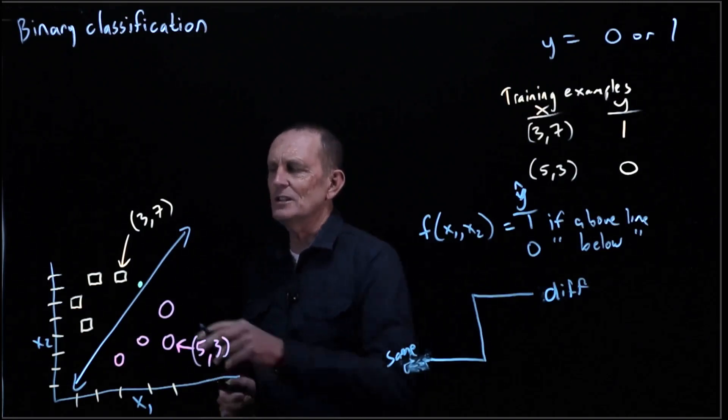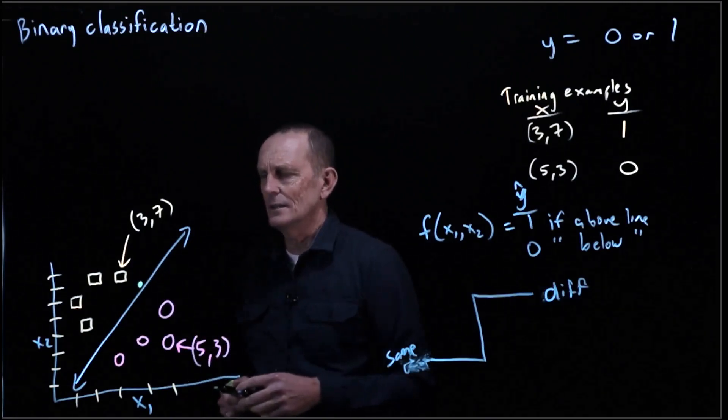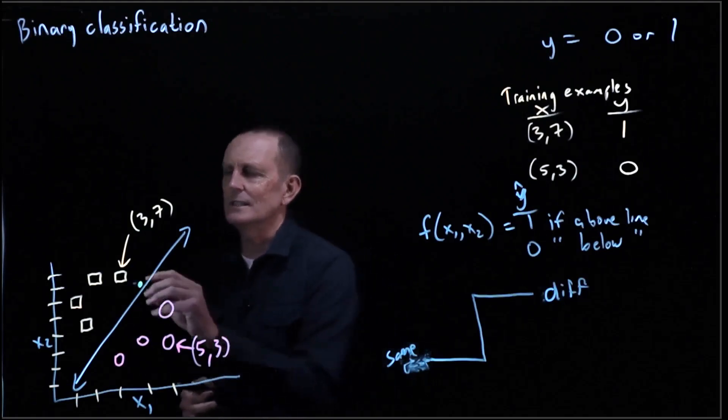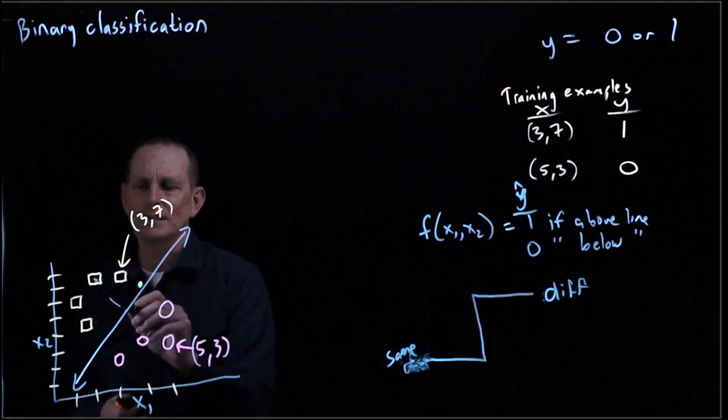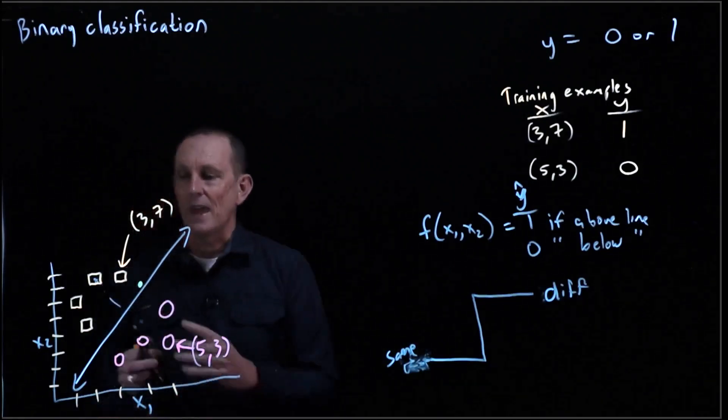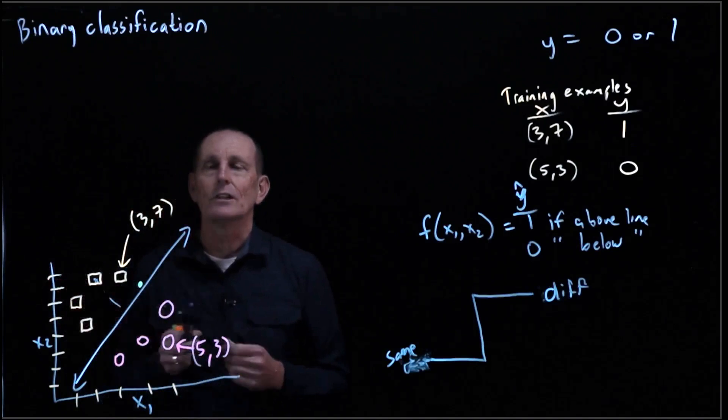Well, why don't we try this? Why don't we try just measuring the distance? Let's measure the distance, let's say, from a particular point perpendicular to the line it's on. And that way things that are farther away will have a larger value.